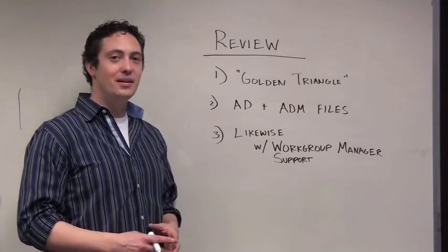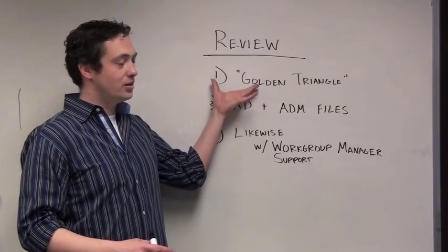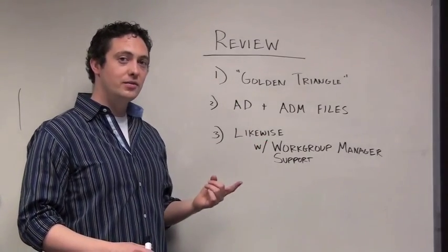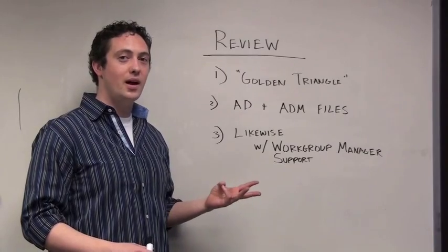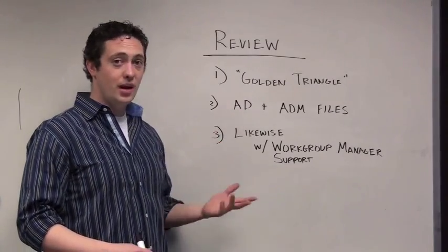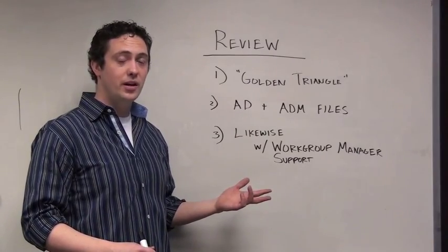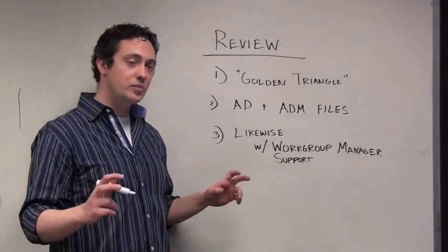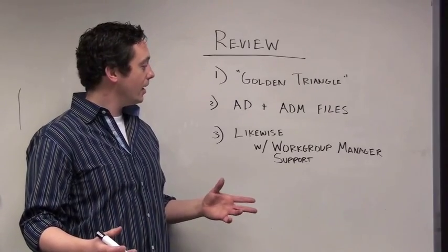Okay, so in review, we've talked about three scenarios today. The first of which is the Golden Triangle using Active Directory, Open Directory, and the Active Directory plugin from Apple. The second scenario is using Active Directory, a third-party vendor, and ADM files to force policies on your Macs.